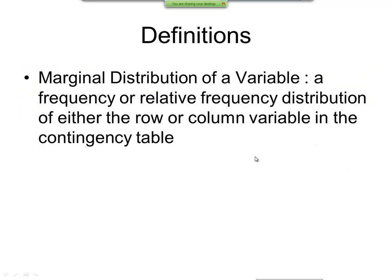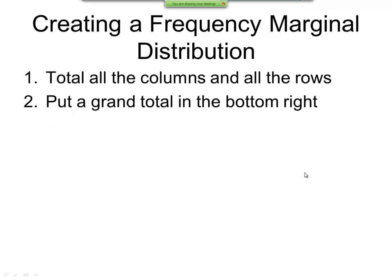Now the marginal distribution of a variable, this is a frequency or relative frequency distribution of either the row or column variable in the contingency table. And how we create one is we total all the columns and all rows and put a grand total in bottom right. And this is for a frequency marginal distribution.